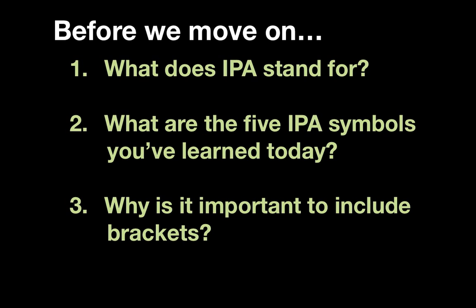Number two, what are the five IPA symbols you've learned today? Well, you should have them there on the paper in front of you. They are the symbols for A, E, I, O, and U.